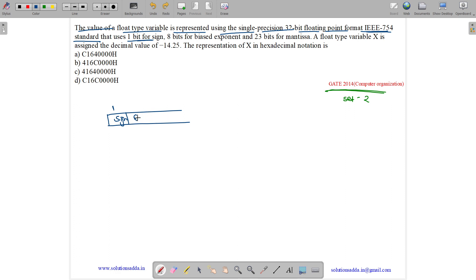Mantissa will be here. Mantissa 23 bits and we will have our exponent of 8 bits. So 8 bits for exponent and 23 bits for mantissa.